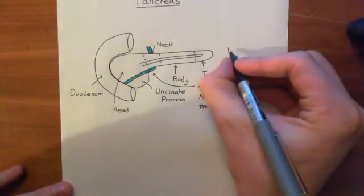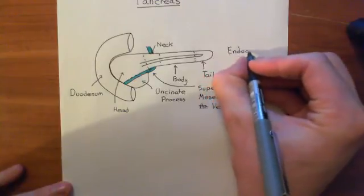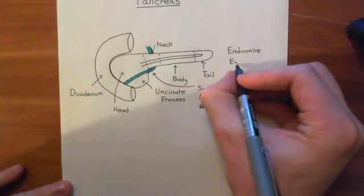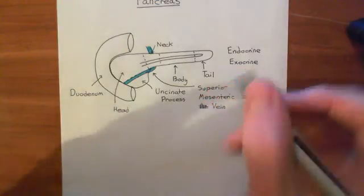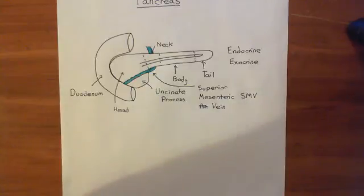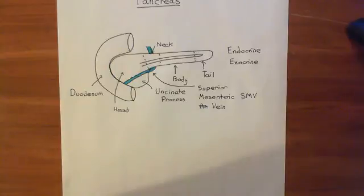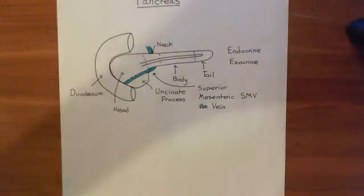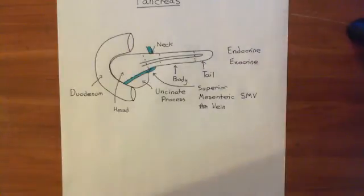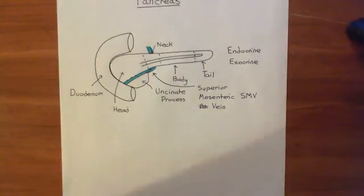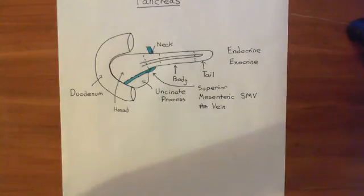An important thing to understand is that the pancreas has two roles. It has an endocrine role, which is that it secretes hormones into the blood. It also has an exocrine function, which means it's secreting products into the outside world — and the intestinal lumen is counted as the outside world. The tube through the middle of us is considered outside of our body; the epithelium of the gut is our outer boundary, and the contents within the intestine are on the outside. So the exocrine part of the pancreas secretes products into the intestinal lumen.